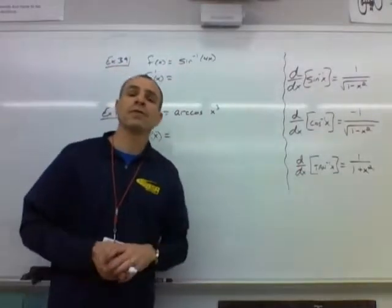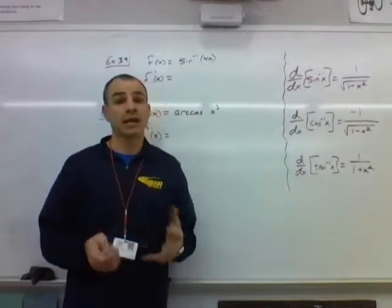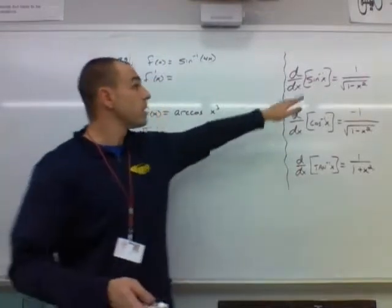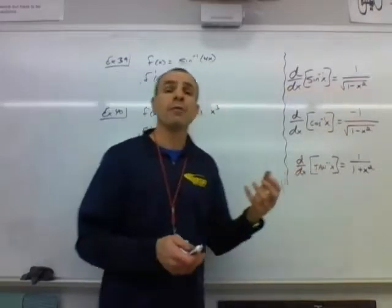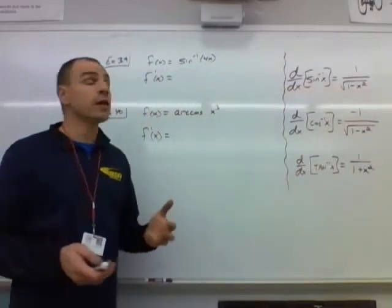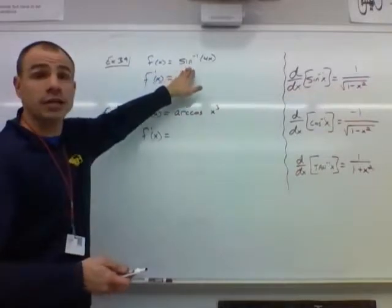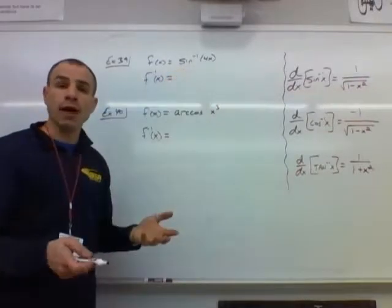You have to find the derivative of inverse sine of 4x. So it's not just x, it's 4x there. If it was just x, that would be our answer and we'd move on to the next problem. But we have 4x there, so we're going to have to do the chain rule. The outer function is inverse sine, the inner function is 4x.